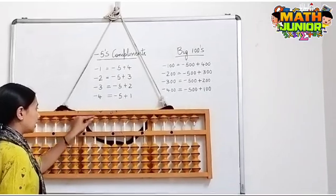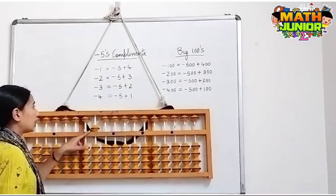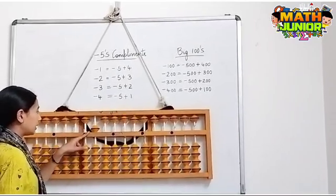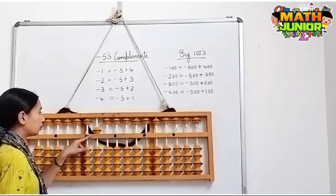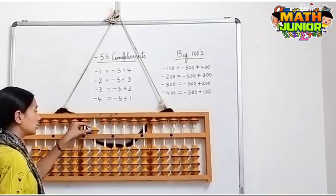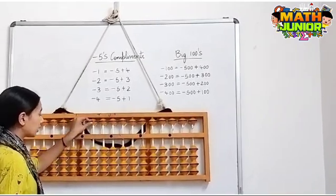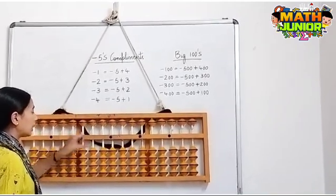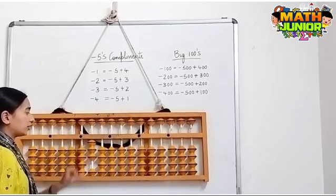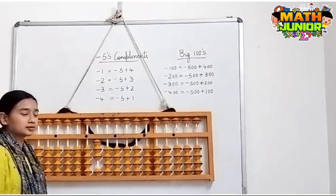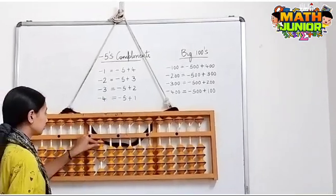Next, I have 500 and I need to remove 200, so the formula for minus 200 is minus 500 plus 300.